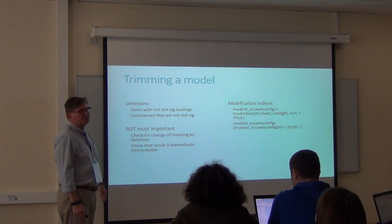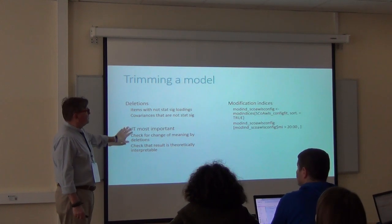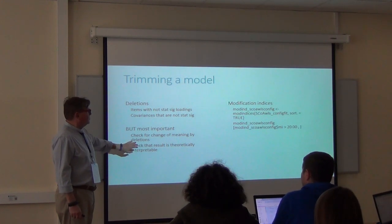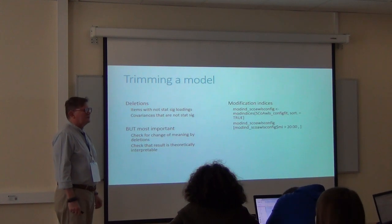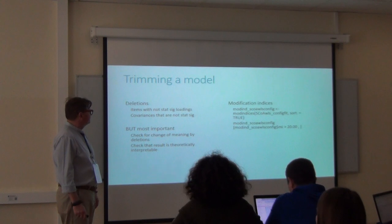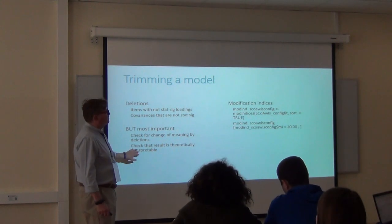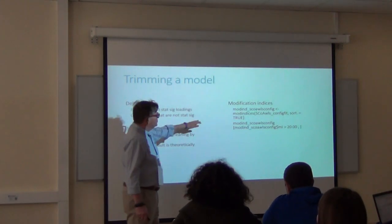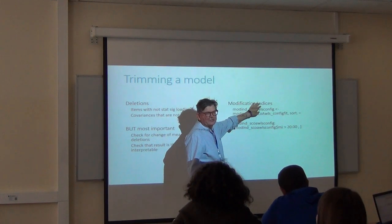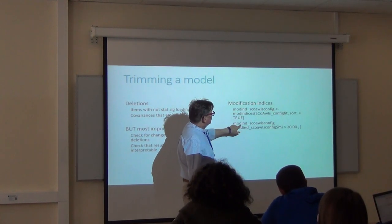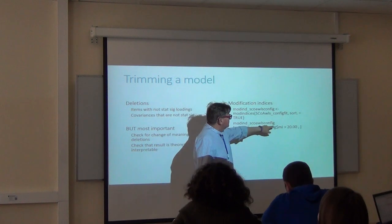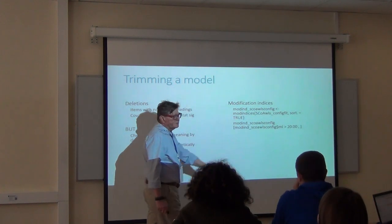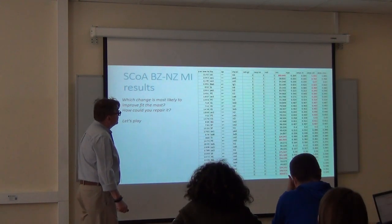Clearly, as I've said before, items that are not statistically significant could be dropped, covariances that are not statistically significant could be dropped. But whatever you do, you'll check for what does it mean if I take this item away, is it theoretically trivial? You can go back to the Modification Indices command and tell it to show me only the big ones.